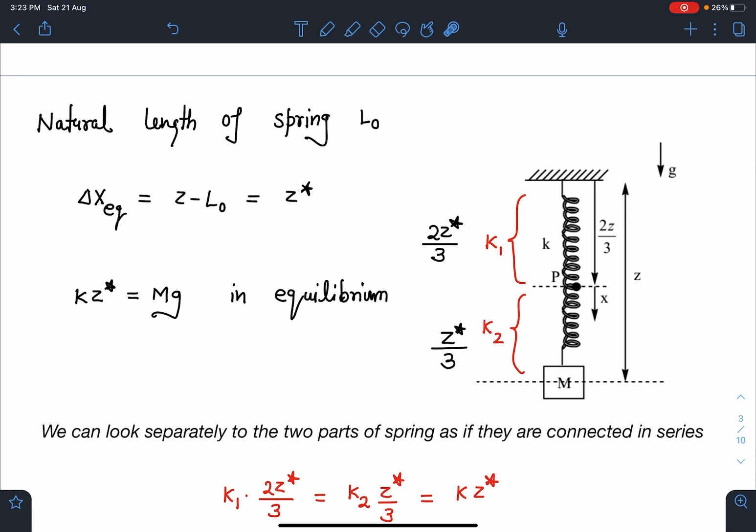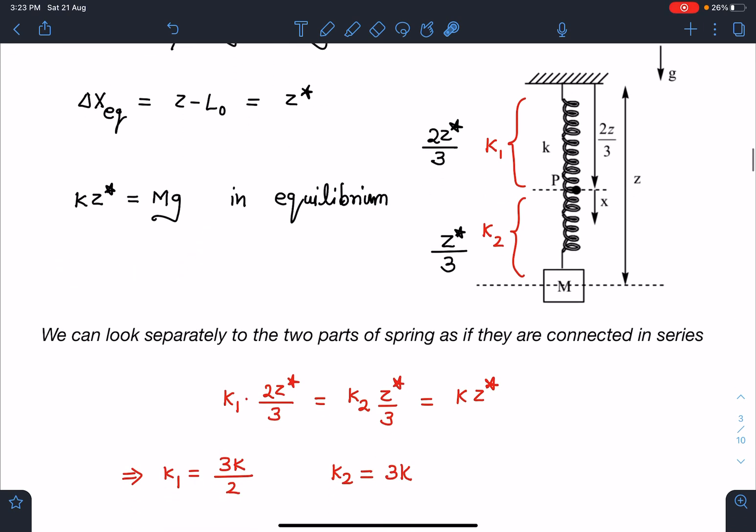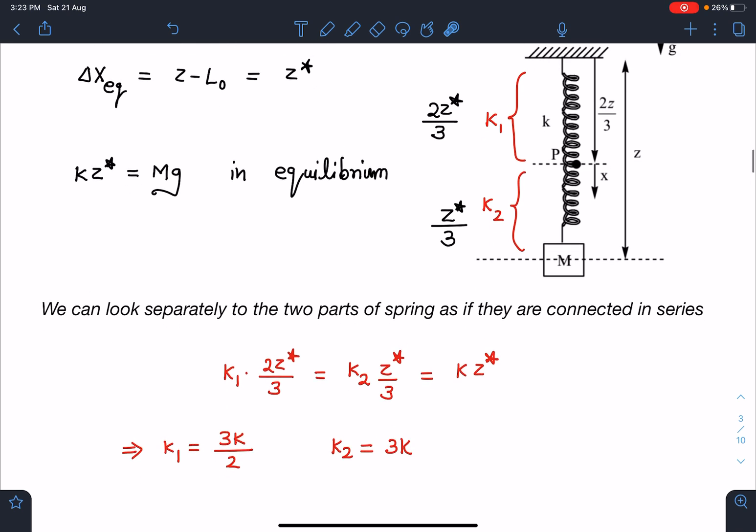Conceptually we should deal with extensions here. When this spring is in equilibrium and this is point P which the agent will be shifting, I can treat this as combination of two springs in series - one is k₁ and another is k₂. Since it is proportional to length, I can say extension in the upper part is 2z*/3 and extension in this part is z*/3. And kz* = Mg in equilibrium. Since we are taking these two springs in series connection, I can write k₁ × 2z*/3 = k₂ × z*/3 = kz*. From here I can find k₁ = 3k/2 and k₂ = 3k.